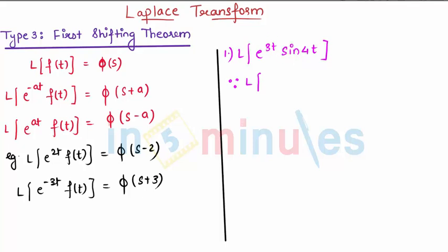As we know, e raised to 3t is nothing but the effect of first shifting and sine 4t is nothing but I can say it is my original function, that is f of t.